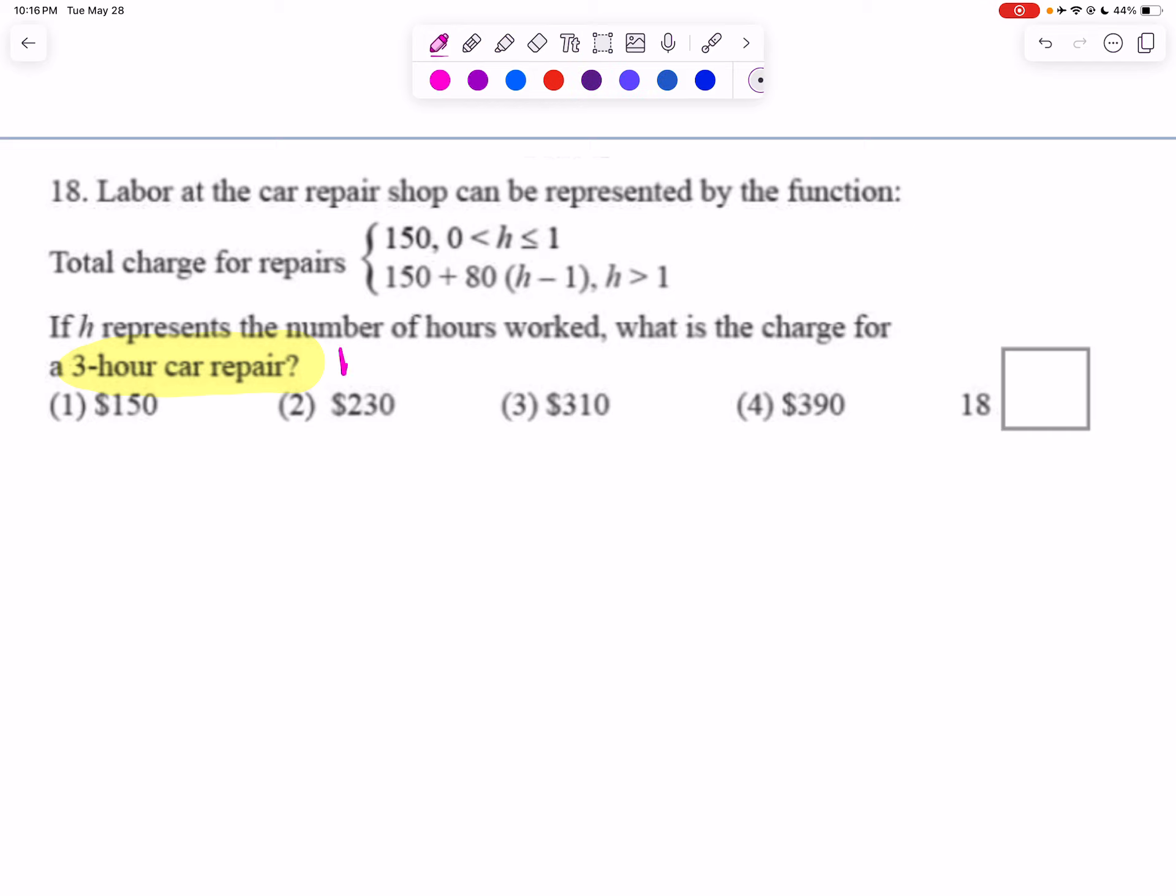So basically they want us to plug in h equals 3. Now we have to figure out what part of our piecewise function that 3 is going to go into. Is it going to go into piece 1 or piece 2?